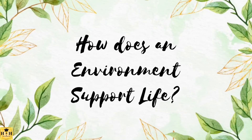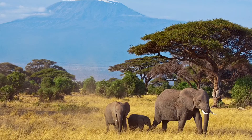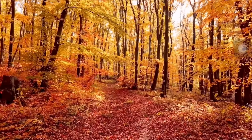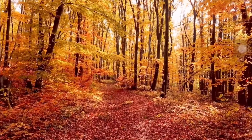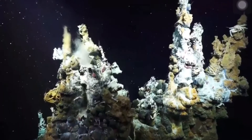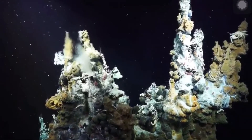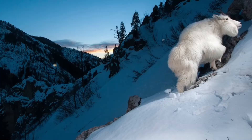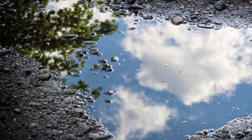How does an environment support life? A habitat is a place where an organism lives. Every environment is a habitat for organisms, from superheated hydrothermal vents on the ocean floor to snow-covered mountainsides. Even a tiny puddle is home to a variety of life, which is a micro habitat.